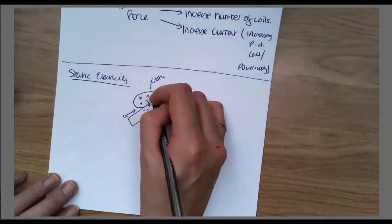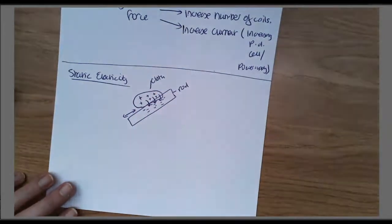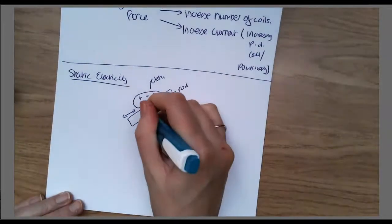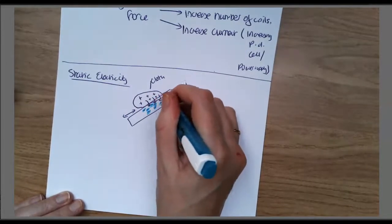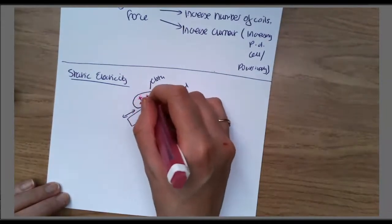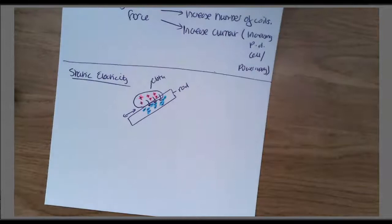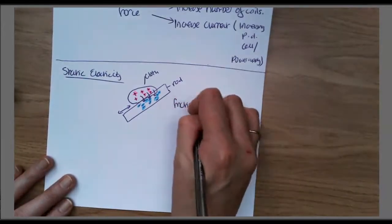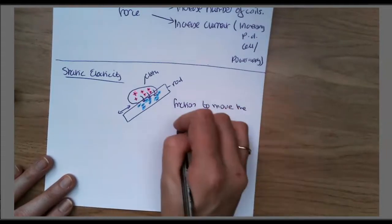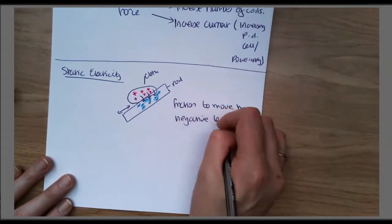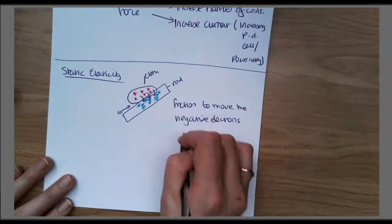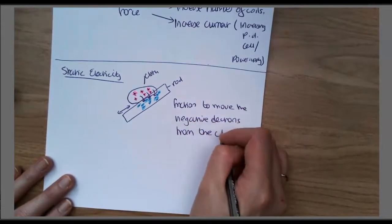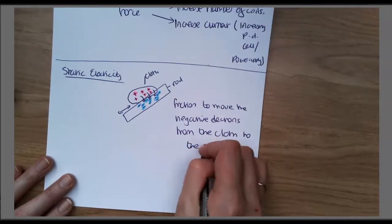What happened when we rubbed the rod with the cloth was lots of electrons moved from the cloth to the rod. Because electrons have a negative charge, it left a positive charge on the cloth. We've got lots of negative charges here and lots of positive charges here. We used friction to move the negative electrons from the cloth to the rod.